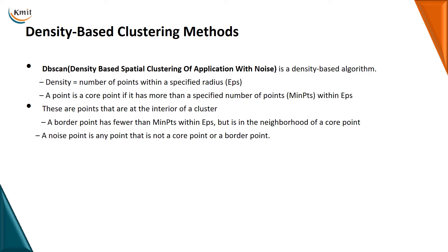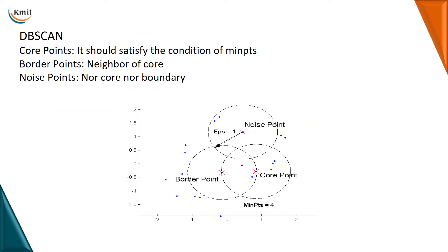Within the epsilon we have three types of points: border points, core points, and noise points. Border points have fewer than the minimum points within epsilon but are in the neighborhood of a core point. Noise points are not core points and not border points — they are completely outside. A core point must satisfy the condition of minimum points.